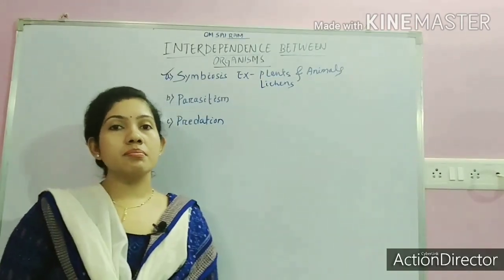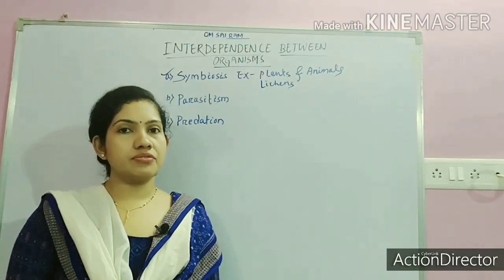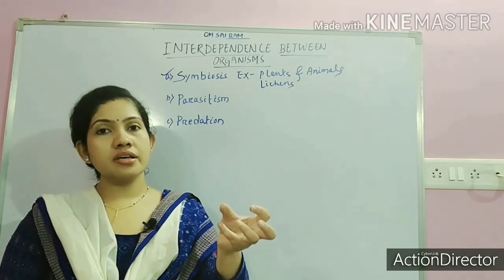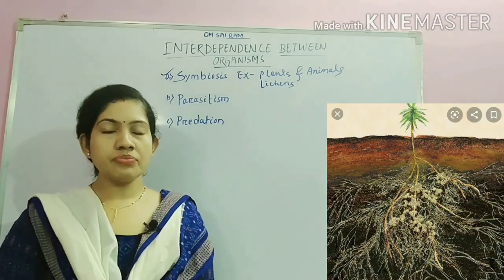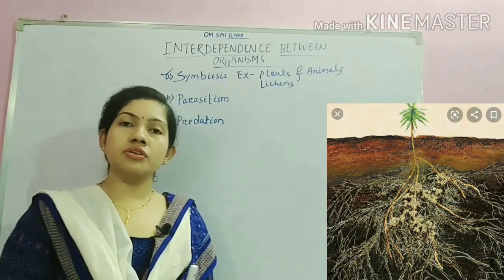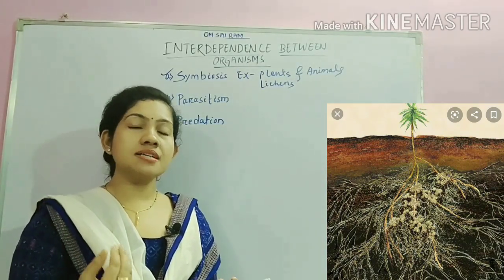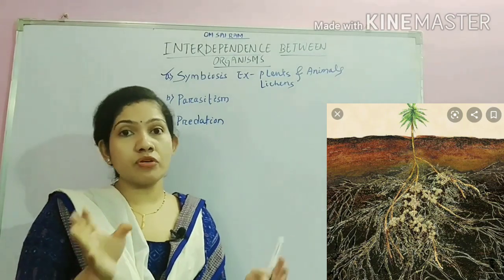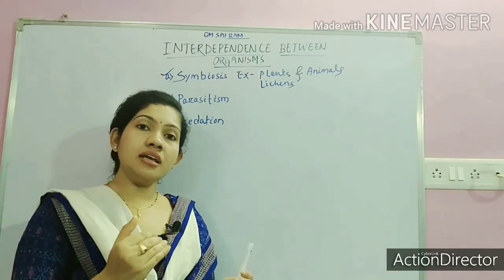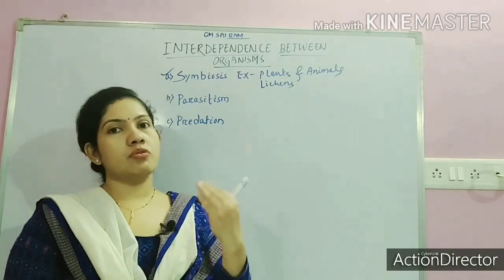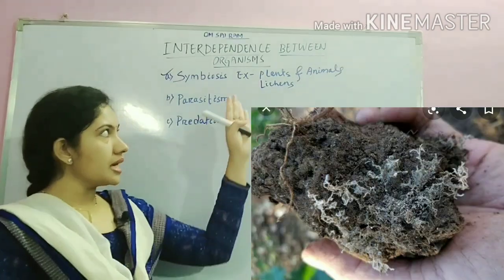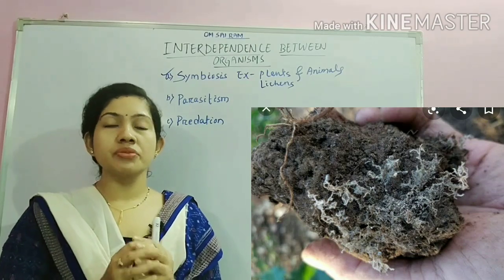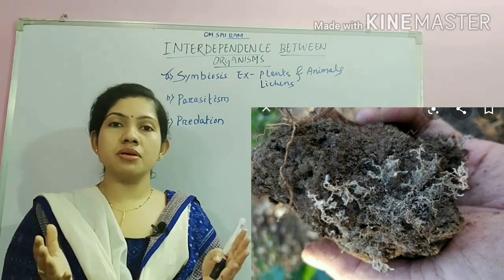Lichens are the symbiotic association between algae and fungi. Another example is mycorrhiza. Mycorrhiza is a symbiotic association between some fungi and the roots of some plants. The fungi help with nutrient absorption, including nitrogen utilization, and in turn the plants provide food to the fungi. This is a symbiotic relationship where both organisms are mutually benefited — no organism is harmed.